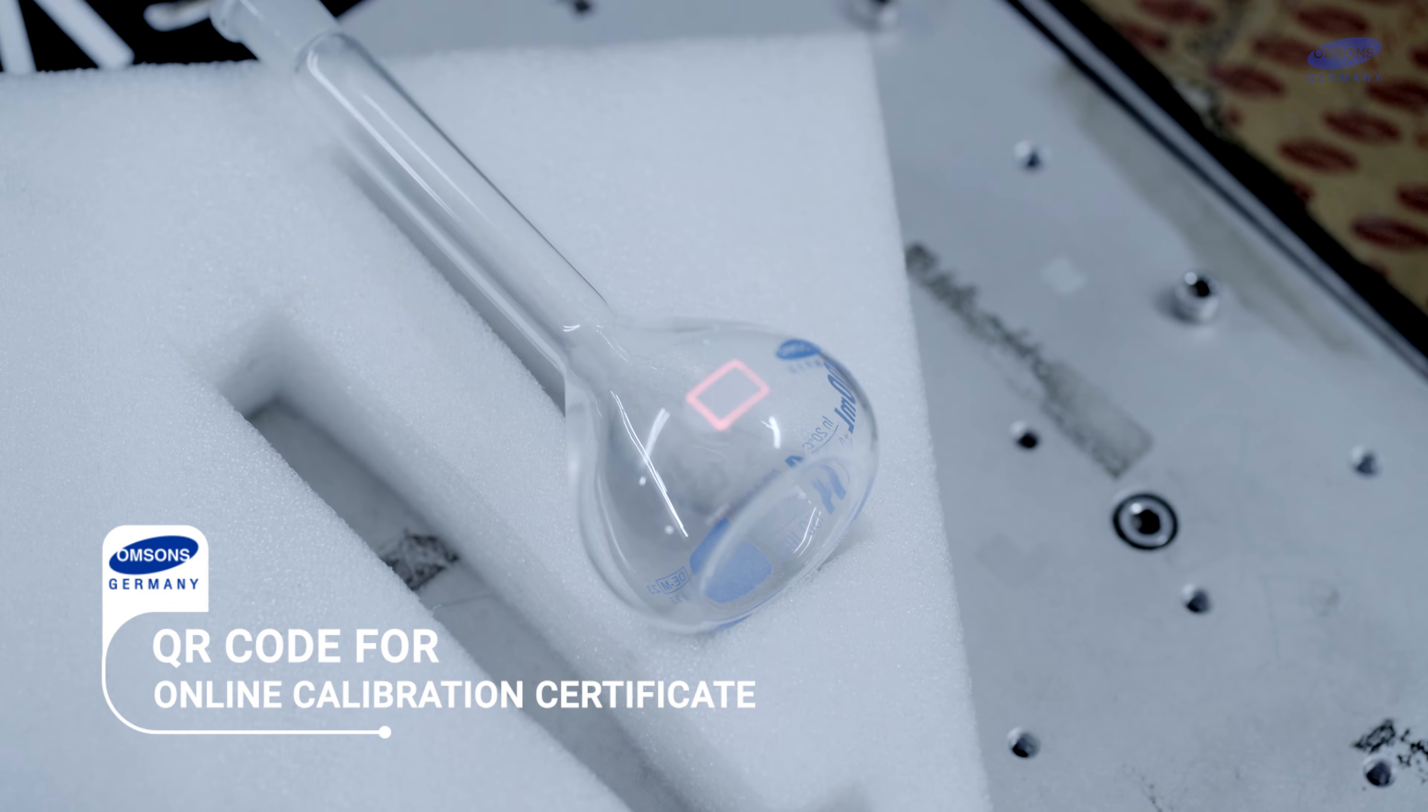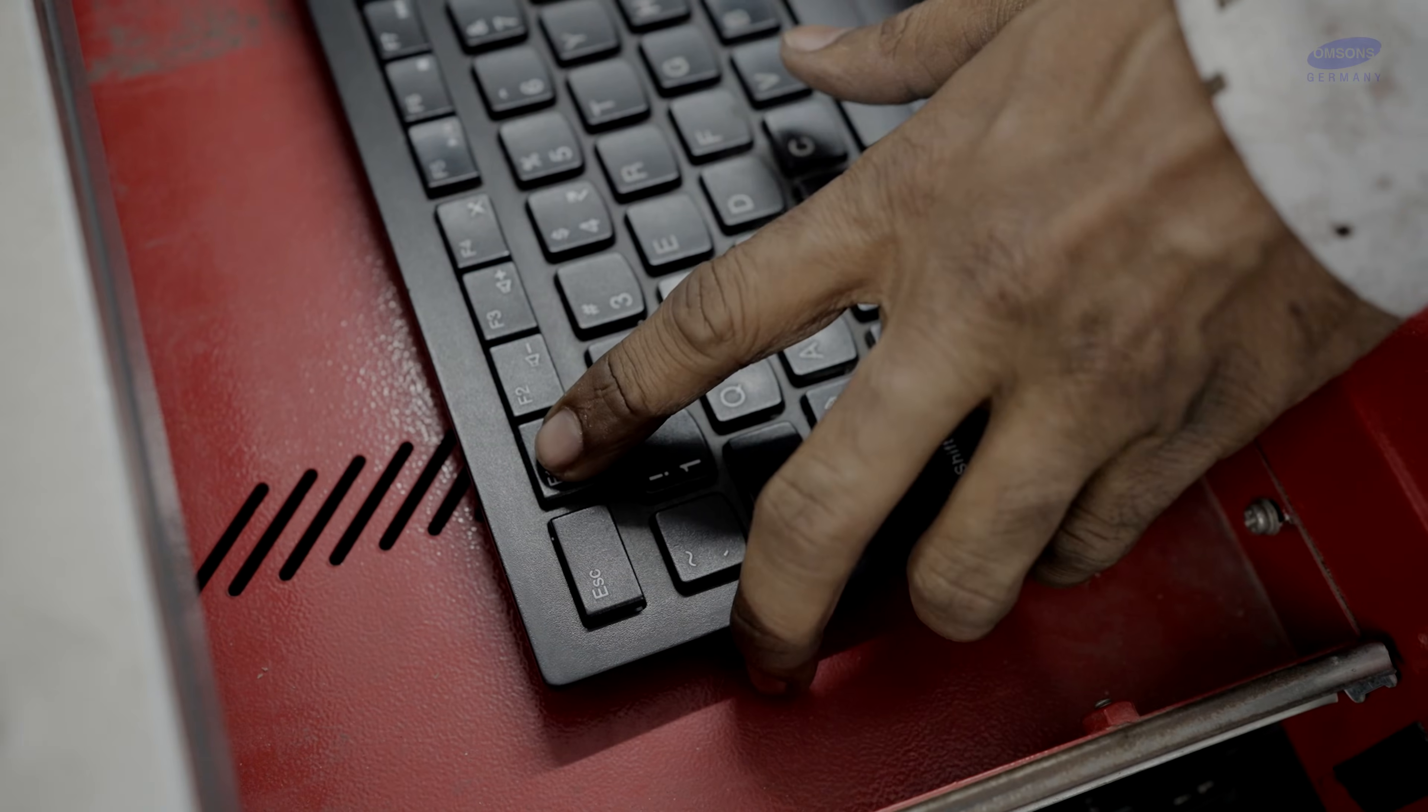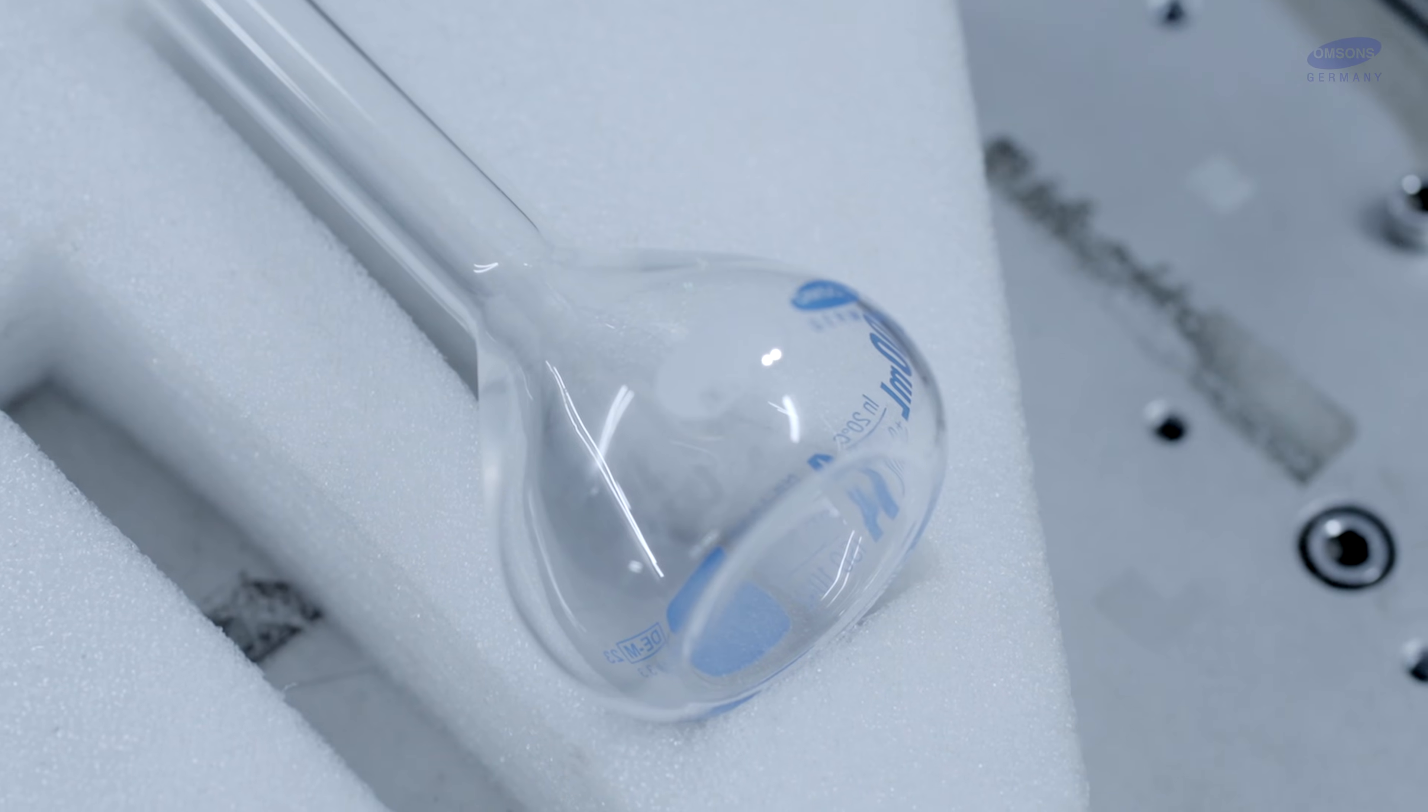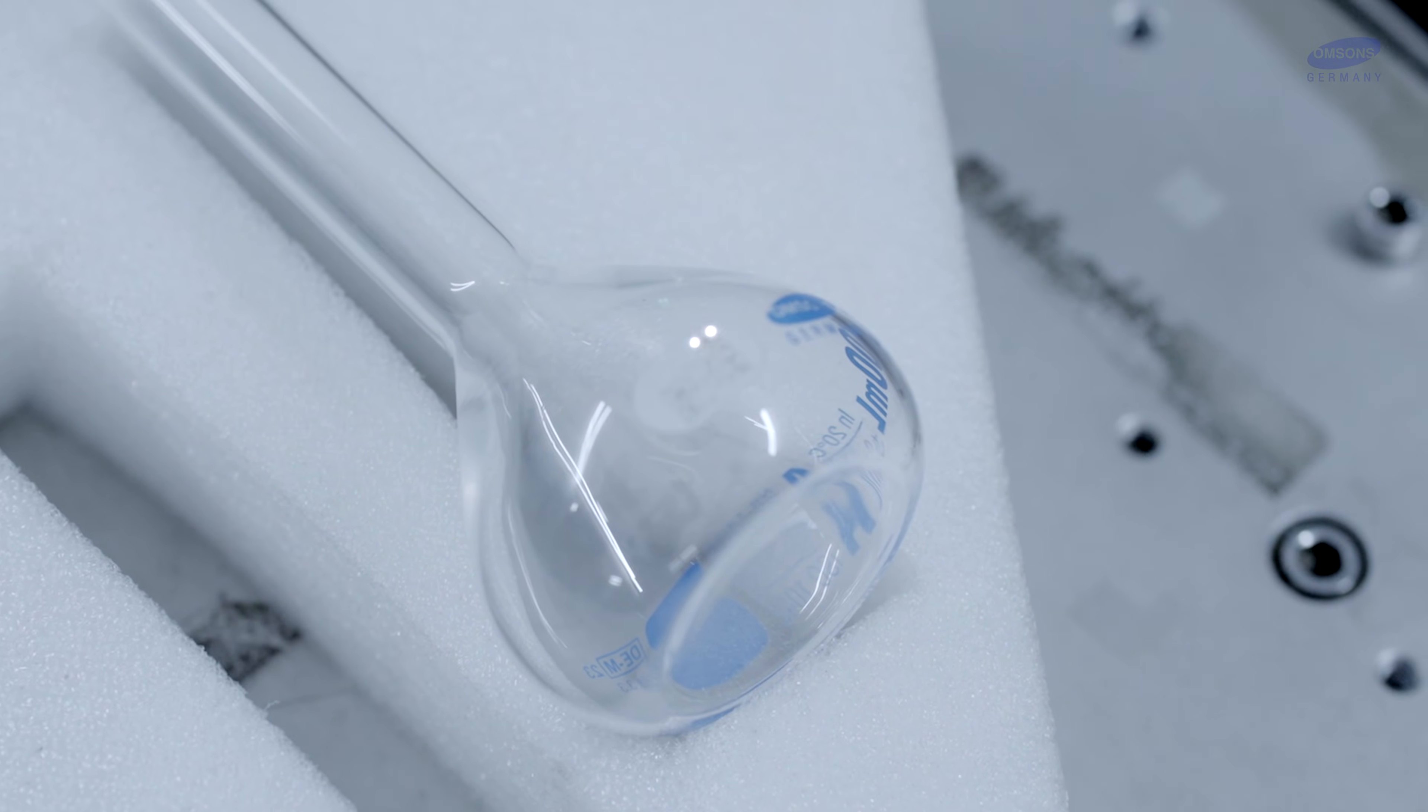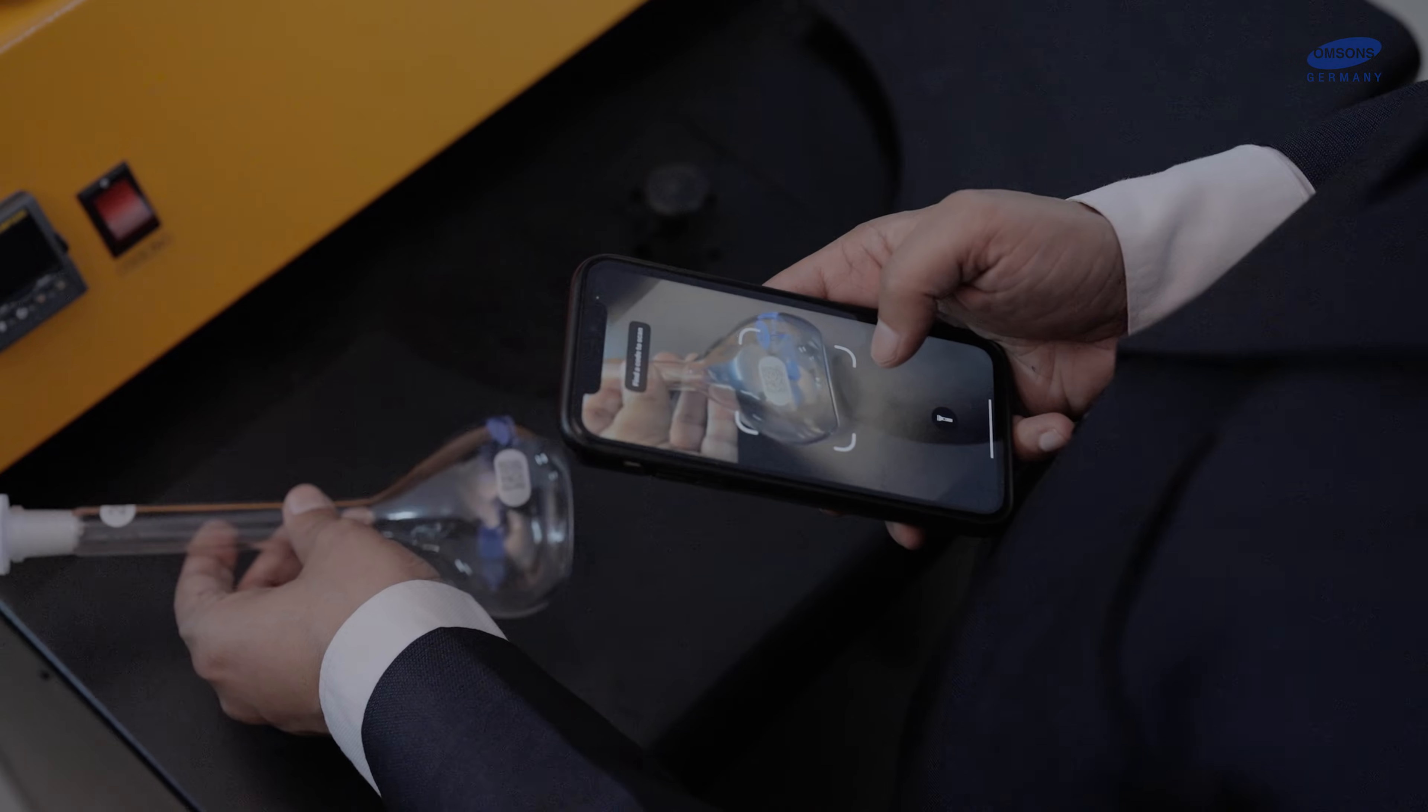Keeping abreast the latest technology, we print QR code on our volumetric glassware. All you need to do is scan the QR code and download the certificate on your phone, tablet, or computer.